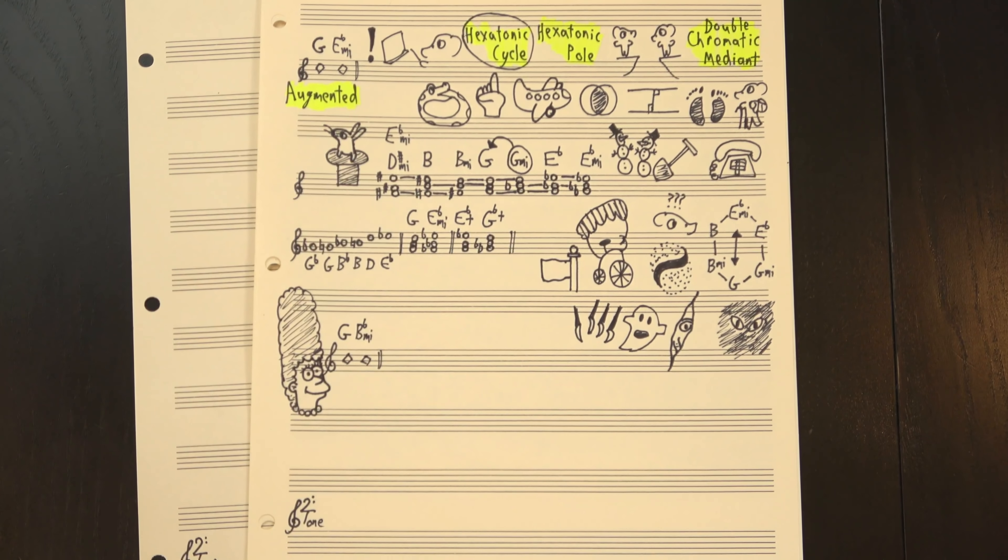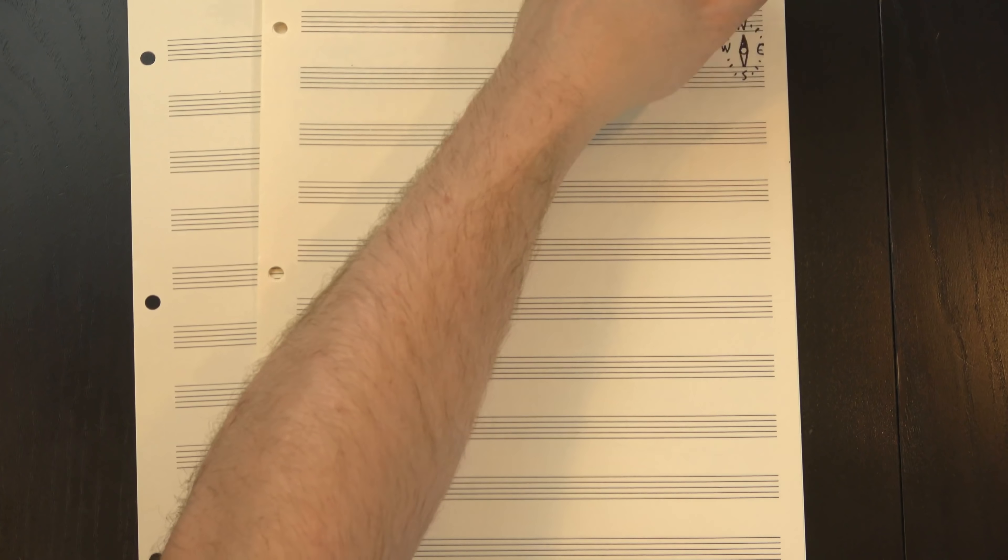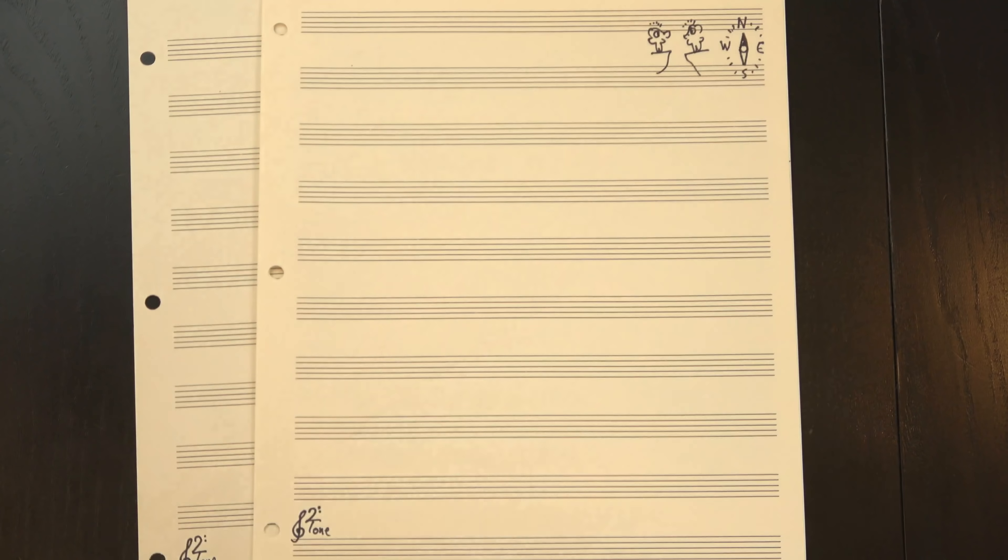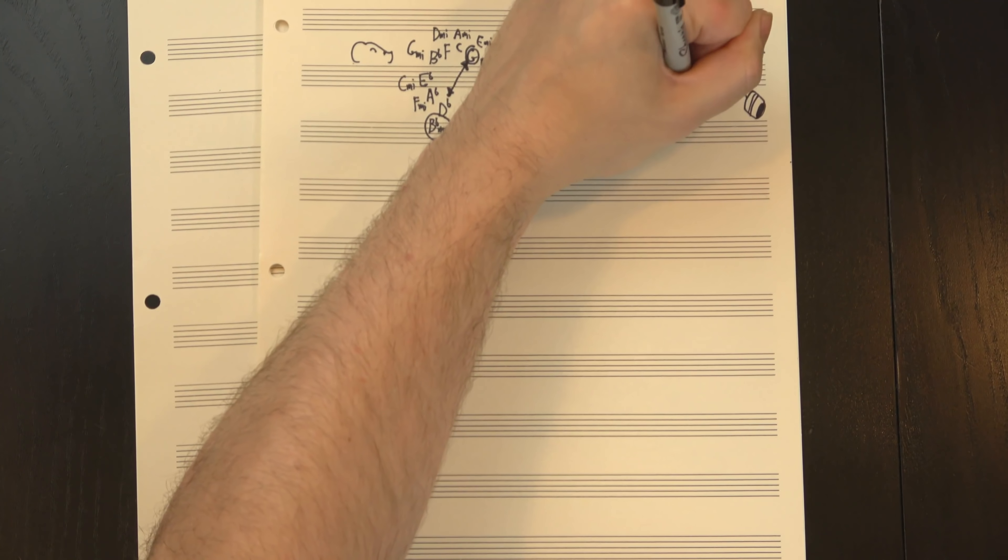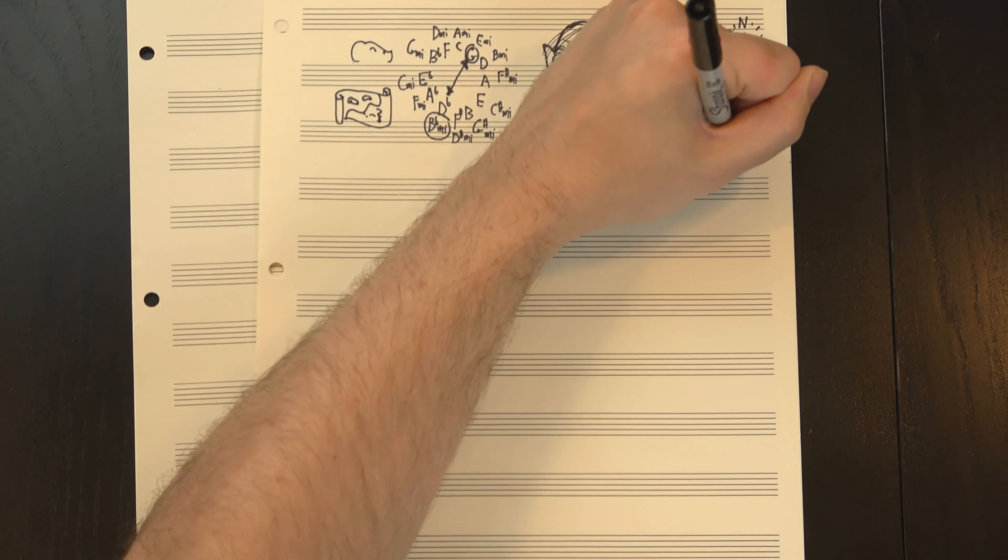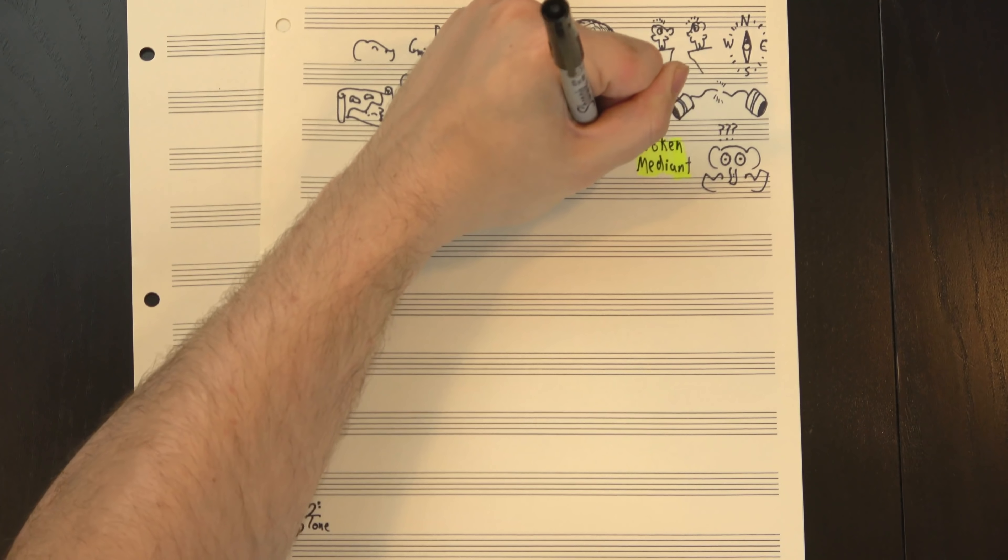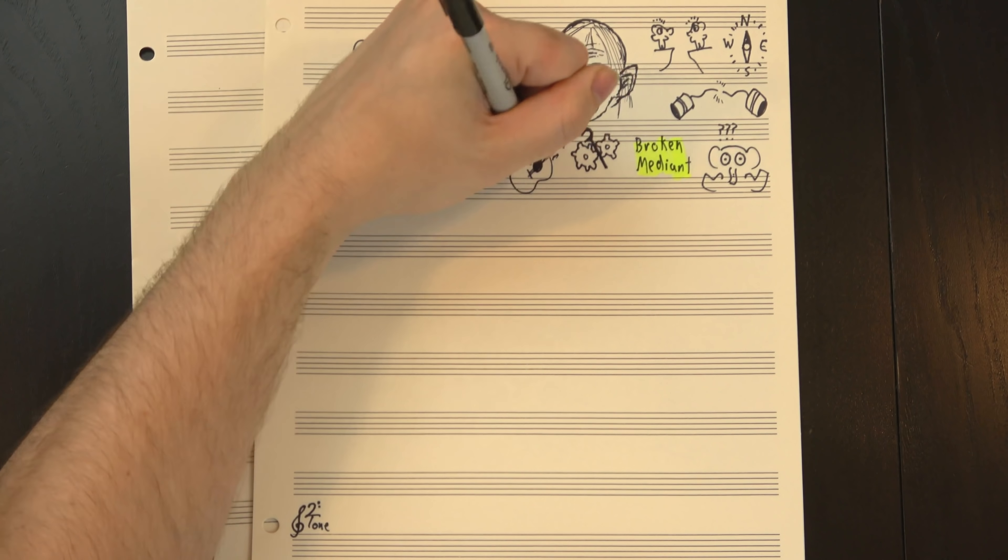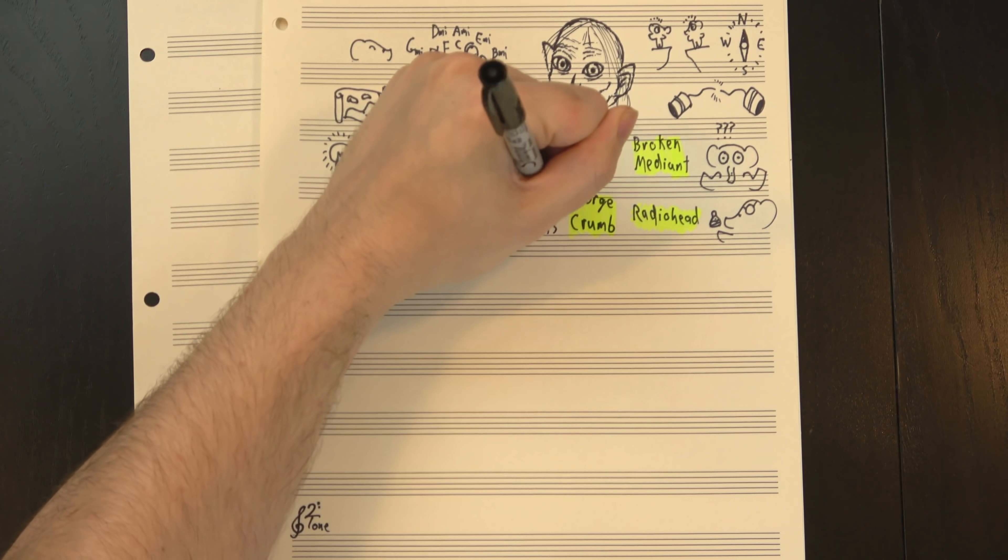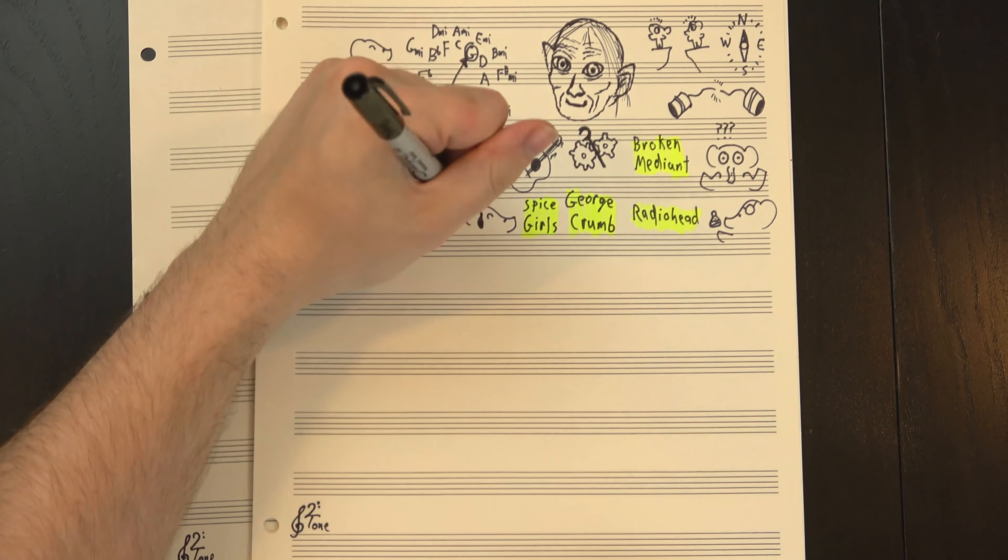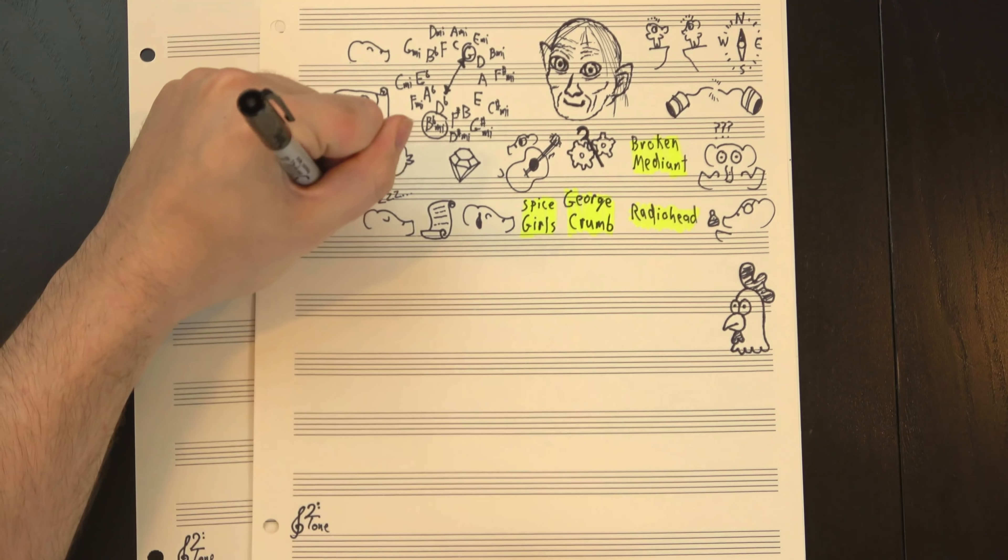Our last mediant is G to Bb minor, and this one's weird. It's kinda like the opposite of the relative relationship - the two chords evoke two scales that are as different as possible. This pair is the furthest distance along the circle of fifths. It's a fine sound, it just doesn't have any tonal connection, and there's no particular voice-leading relationship either. Riemann himself described it as scarcely comprehensible. As such, I'm gonna call it the broken mediant. I was curious if anyone had ever actually used this chord motion in a song, so I asked on Twitter. Most examples I got were from pretty experimental artists like Radiohead and George Crumb, but it also kinda pops up in a Spice Girls song.